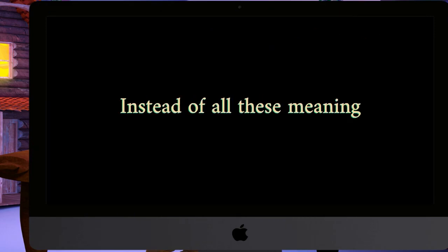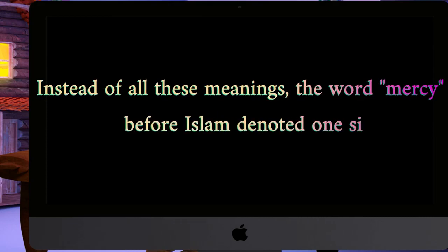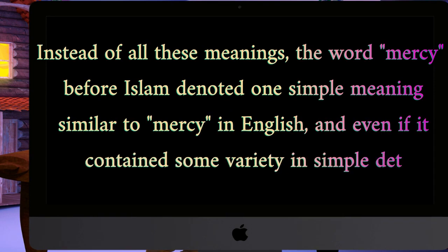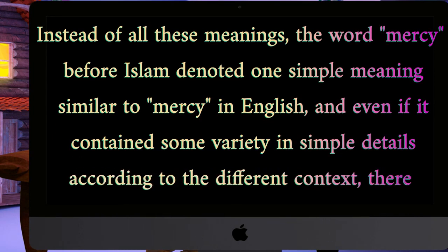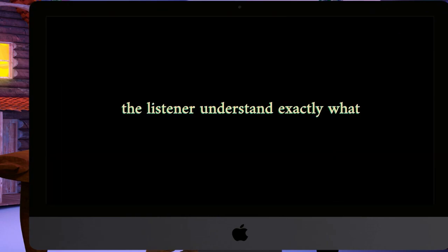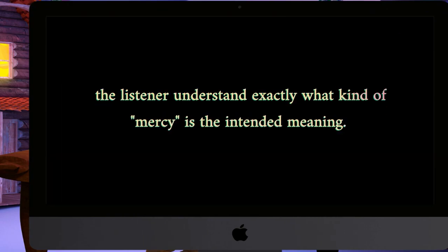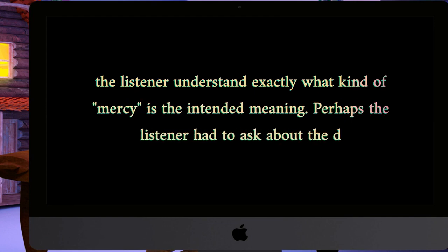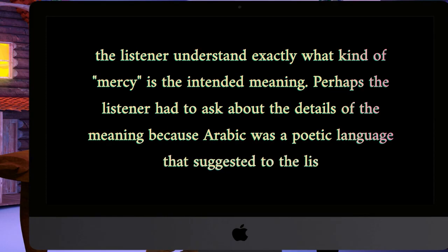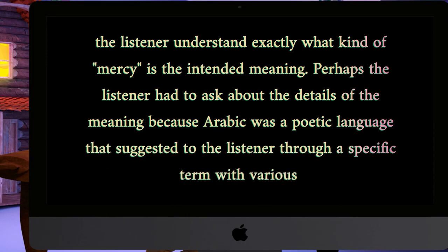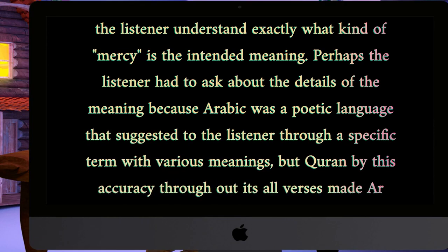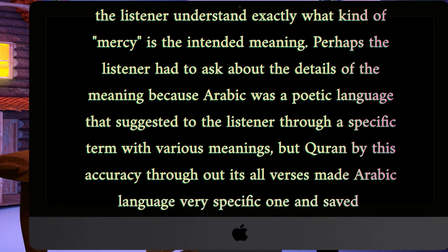Instead of all these meanings, the word mercy before Islam denoted one simple meaning similar to mercy in English, and even if it contained some variety in simple details according to different context, there were no specific structures in Arabic which made the listener understand exactly what kind of mercy was the intended meaning. Perhaps the listener had to ask about the details, because Arabic was a poetic language that suggested various meanings through a specific term. But the Quran, by this accuracy throughout all its verses, made the Arabic language a very specific one and saved it from fuzzy meanings.